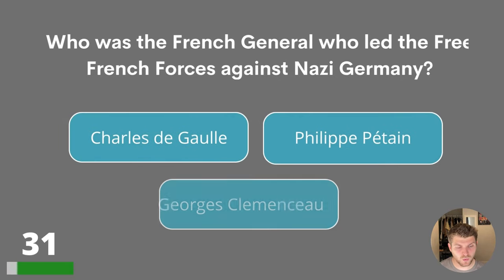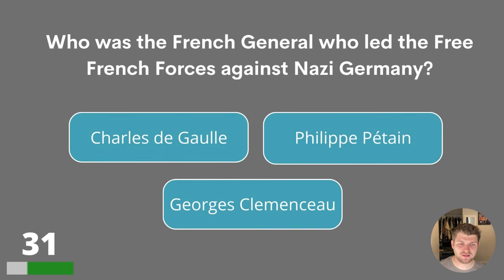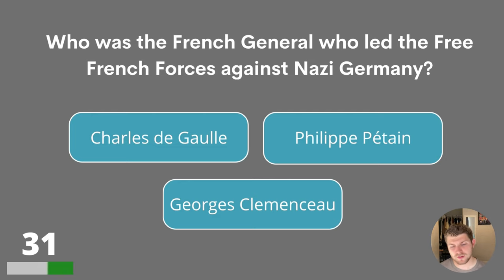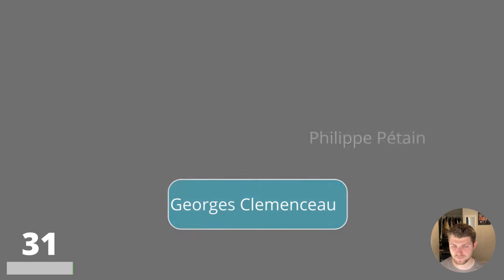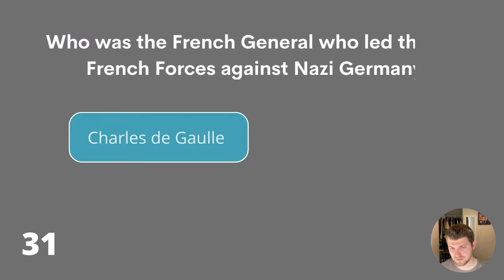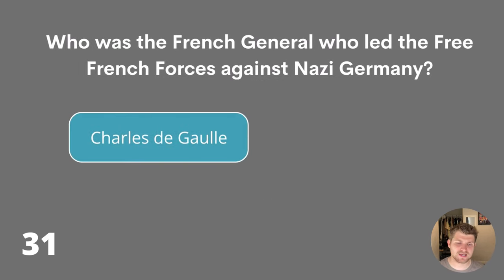Question thirty-one. Who was the French general who led the Free French forces against Nazi Germany? Charles de Gaulle, Philippe Pétain or Georges Clemenceau? The answer is Charles de Gaulle.